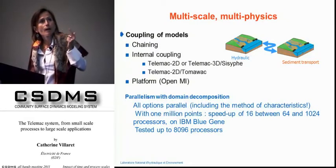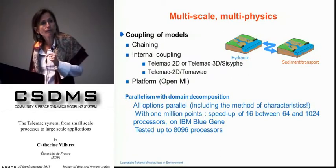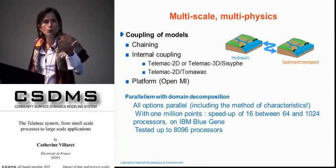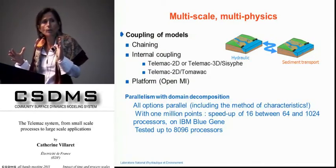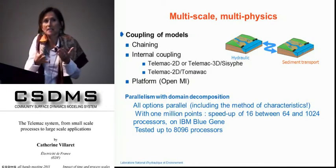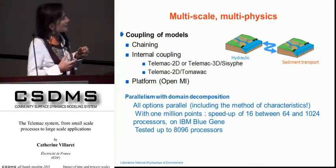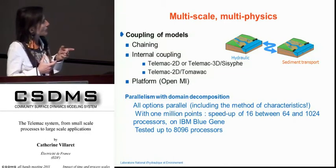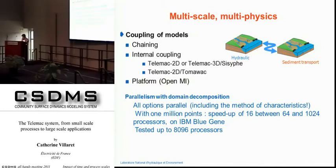An important feature is parallelism — all the options are parallel and we use MPI. We have different options for the advection terms, including the method of characteristics. It's been tested with grids of up to one million points, and tested up to 8,096 processors on IBM BlueGene.